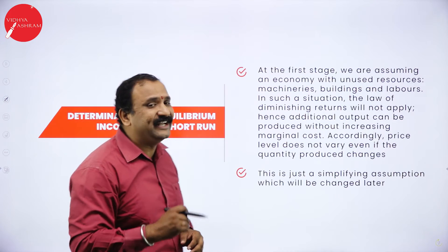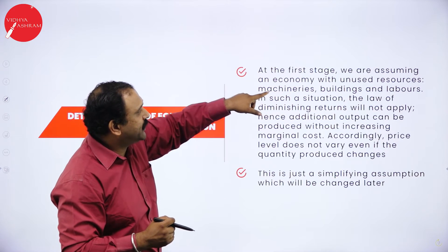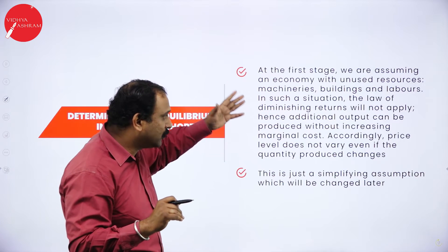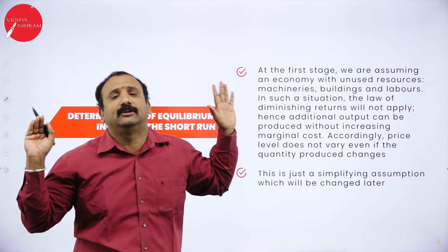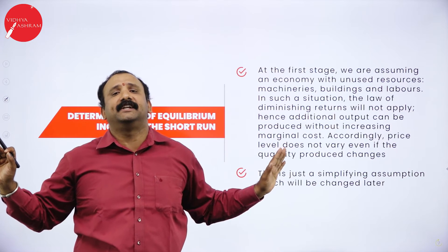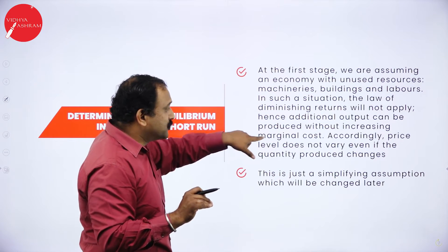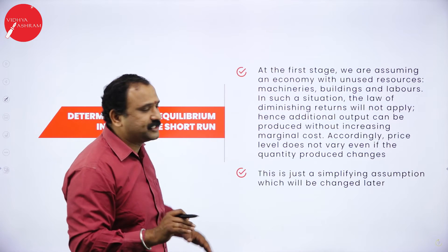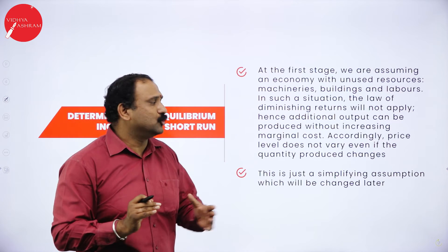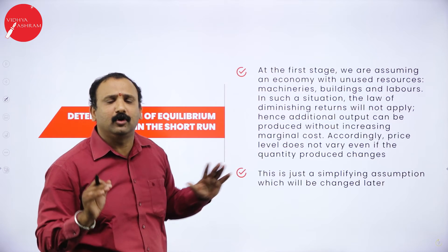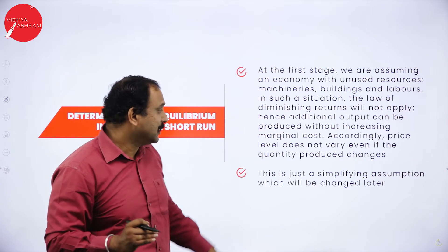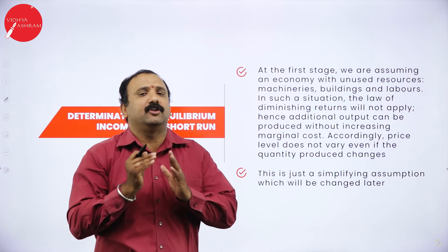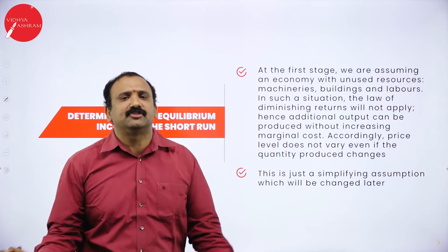Now we will talk about income at the equilibrium stage. We first assume an economy of unused resources — no usage of machinery, buildings, land, or roads. Therefore the law of diminishing returns will not apply, meaning resources are not getting diminished. Accordingly, price level does not vary even if the quantity produced changes because of no usage, and no additional output is being taken into factor. This is a simplifying assumption which will be changed later.